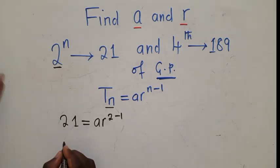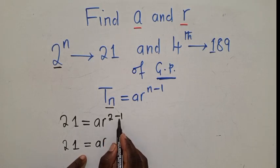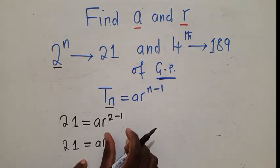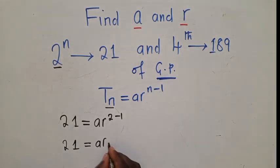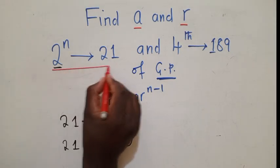So when we simplify it, it will be 21 equals ar. Because 2 minus 1 will just give us 1, so it will be power 1. We shall call this as our equation 1.